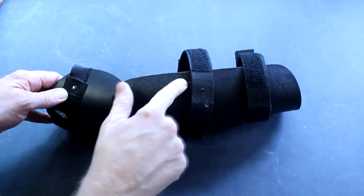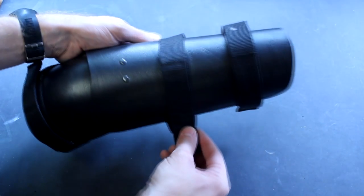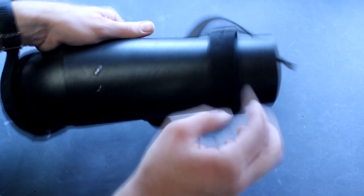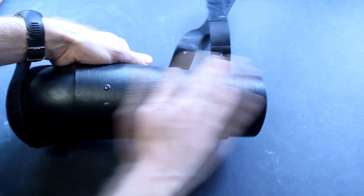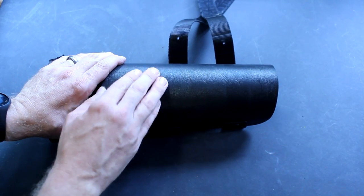By drilling out the rivets on one side of the arm guard, I can detach the whole strap, so it frees up the whole area to attach the knee pads.